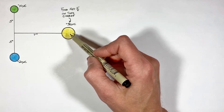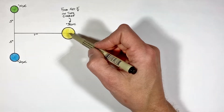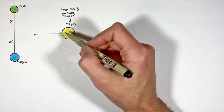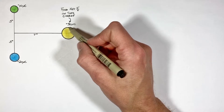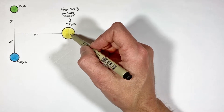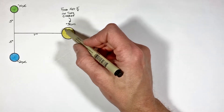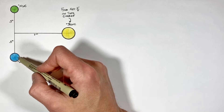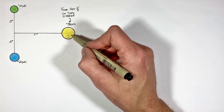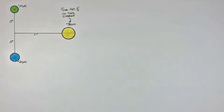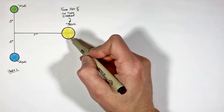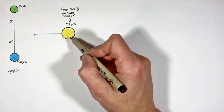First, we're going to need to use geometry to find the distance between these charges as well as the direction which the forces are going to be acting. Then we're going to use Coulomb's law to find the force on this charge by each of the other charges. Last, we're going to use vector addition to find the net force as both its magnitude and direction. This entire problem is dependent on Coulomb's law.